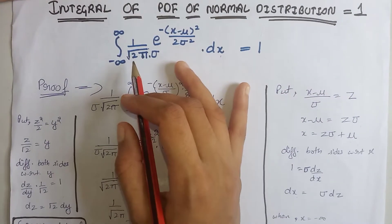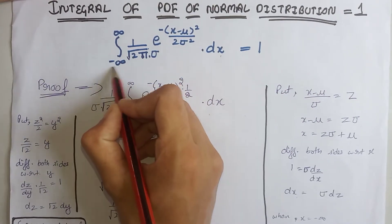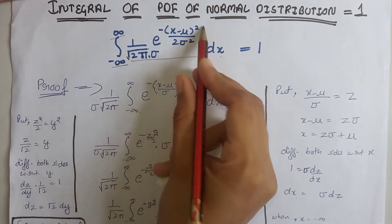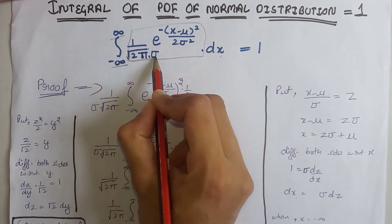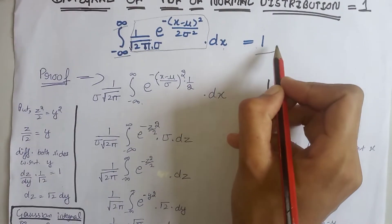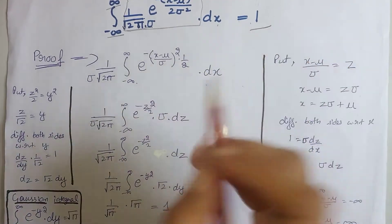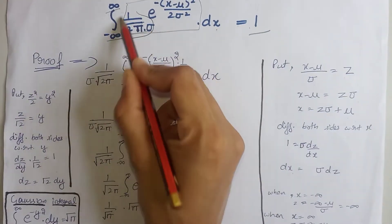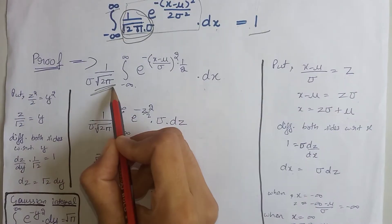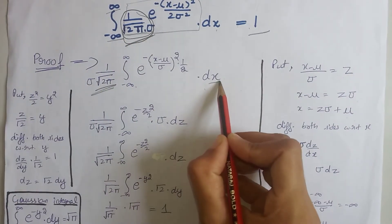We will prove that the integral over all values of x of the PDF of the normal distribution equals 1. Let's start the proof. Firstly, we will take the constant term outside the integral because this term does not contain x.